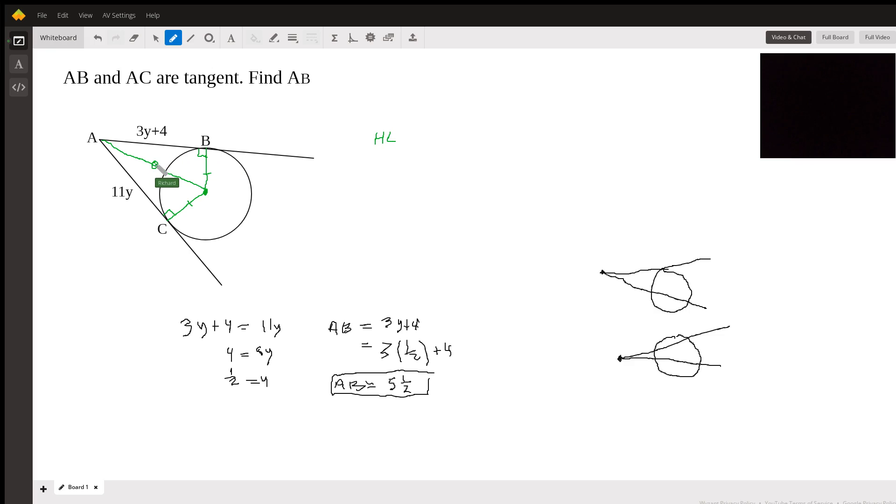So you have a hypotenuse that's congruent and one of the legs are congruent. And this HL works only for right triangles. All we have to do is find a hypotenuse and a leg. And that's all we need.